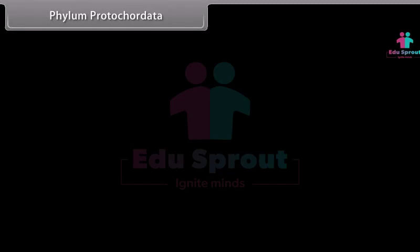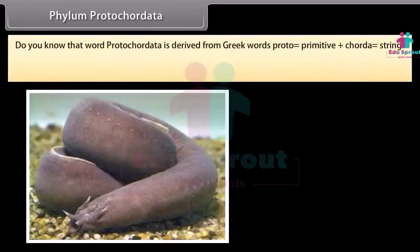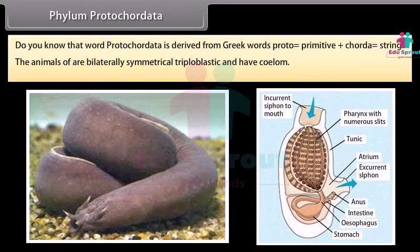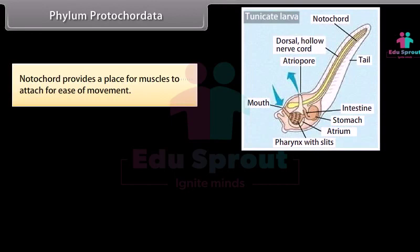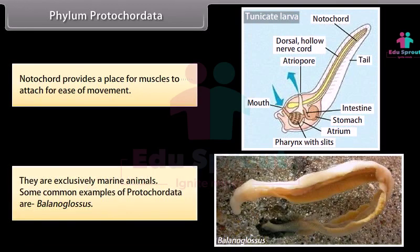Phylum Protochordata. The word Protochordata is derived from Greek words: proto, meaning primitive, plus chorda, meaning string. The animals are bilaterally symmetrical, triploblastic, and have a coelom. They have a notochord — a long rod-like support structure that runs along the back of the animal, separating the nervous tissue from the gut. This notochord is not present at all stages of life. The notochord provides a place for muscles to attach for ease of movement. They are exclusively marine animals. A common example is Balanoglossus.